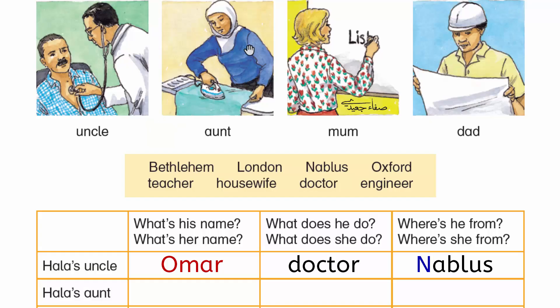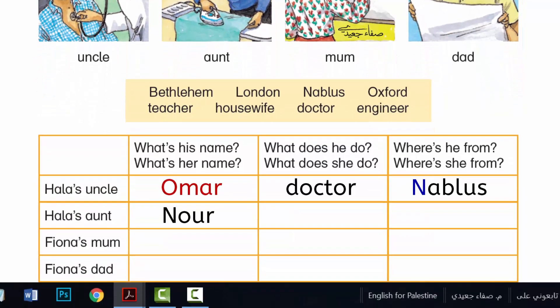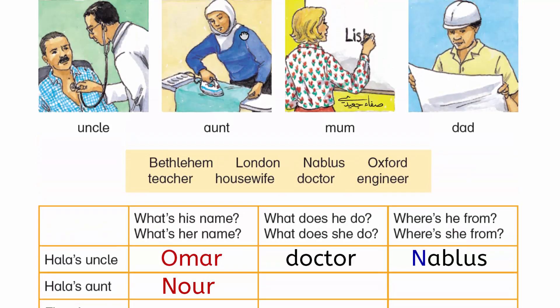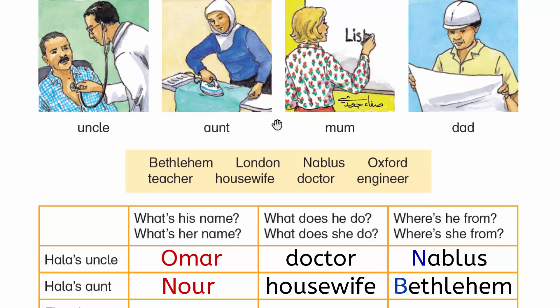Who's this, Hala? This is my aunt. What's her name? N-O-U-R. How do you spell that? N-O-U-R. What does she do? She's a housewife. Where's she from? Bethlehem.